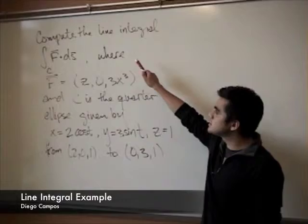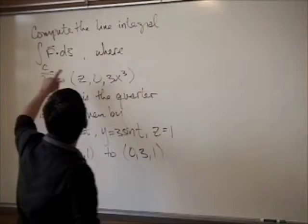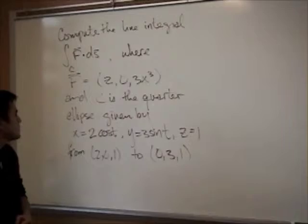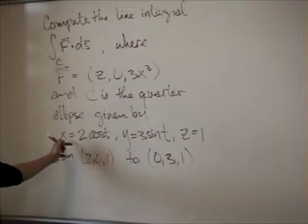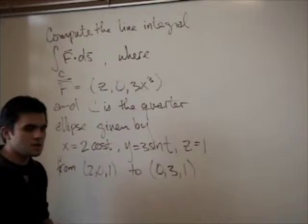We're going to start with this problem. It says compute the line integral of the vector field where F is z, zero, three x cubed. And your C is a quarter ellipse given by the parameterization of x equals two cosine of t, y equals three sine of t, and z equals one from these points.